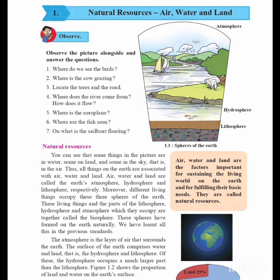Air, water and land are contained in the earth's atmosphere, hydrosphere and lithosphere respectively. Moreover, different living things occupy these three spheres of the earth. These living things and the parts of the lithosphere, hydrosphere, and atmosphere which they occupy are together called the biosphere.